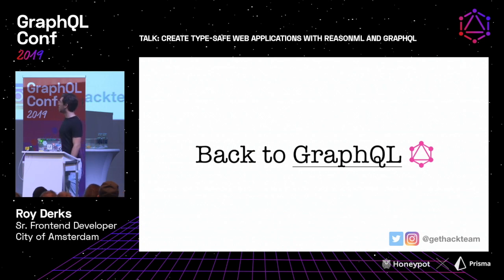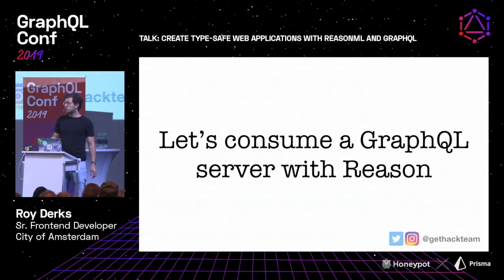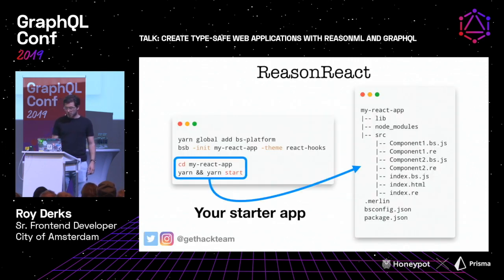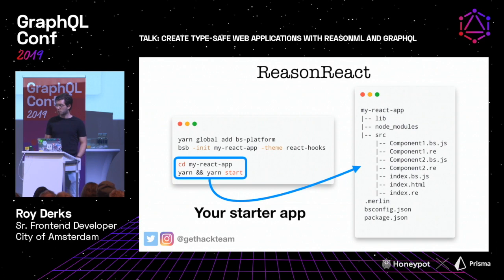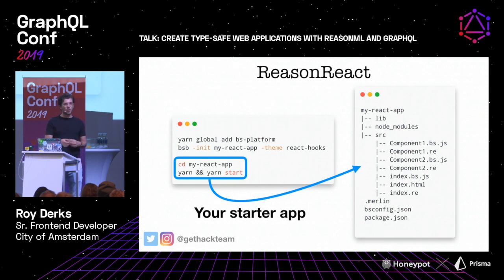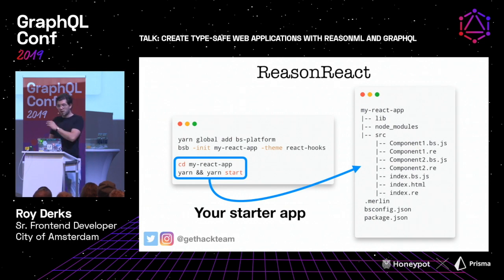But let's get back to GraphQL, because that's why we're here. I'm going to try and consume a GraphQL server with Reason. To install, you can just use Yarn or NPM if you're already familiar with JavaScript. You need to globally install the BS platform — that's the BuckleScript platform — which will help you run, transpile, and do all sorts of things with your code to make it readable for your browser. Then you can start a new project — there are different types of themes, including one for React hooks. Then go into the project, run Yarn, and you'll get an application. This is the starter kit — sort of a create-React-app for Reason.